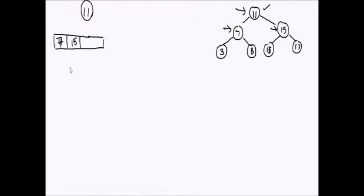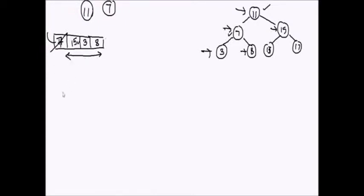How do we move forward? The next node we need to print is 7. We take it out and put it in the output. After 7 we have to print 15, which is already in the auxiliary data storage. After 15 we need to print 3 and 8, so we take the left child of 7 and store it after 15, and the right child of 7 that is 8 and store it after 15. Now we take out 15 and print it, and store its children 13 and 17.